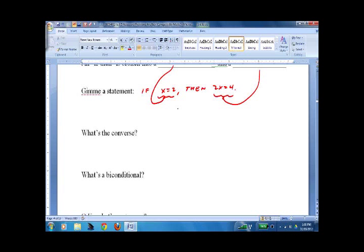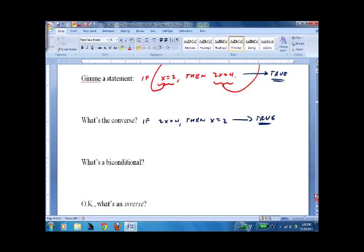We've done the converse before, so this is still review. If 2x equals 4, then x equals 2. By the way, this is true, and this is also true. I can just tell by looking at it. I haven't really done anything fancy.